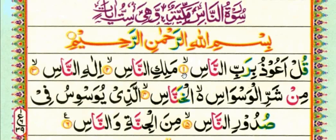Now you can see: one, two, three, four, five, six — this is the ayat count. There are six ayat present in Surah Nas. It is also written in Arabic: Surah Din Nas, Makkiya, Vaheya Sitto — six ayat.